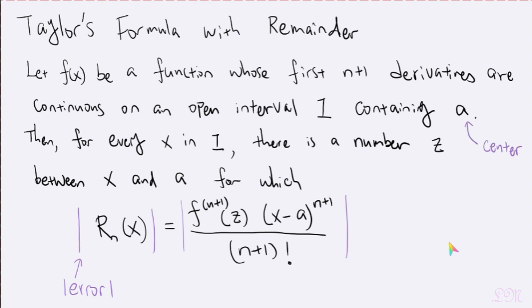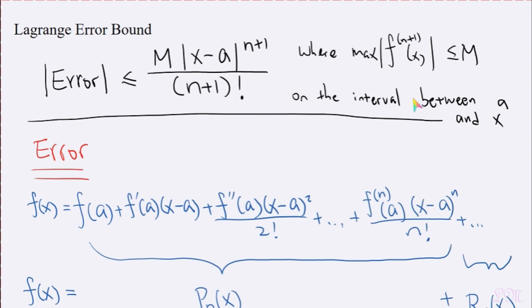Also, since this theorem does not tell us how to find z, but we know such z exists. So if we can find the maximum value of the absolute value of the n plus 1's derivative of f on the interval between x and a, then we can pretty much find the upper bound of the error, which ties back to the Lagrange error bound.